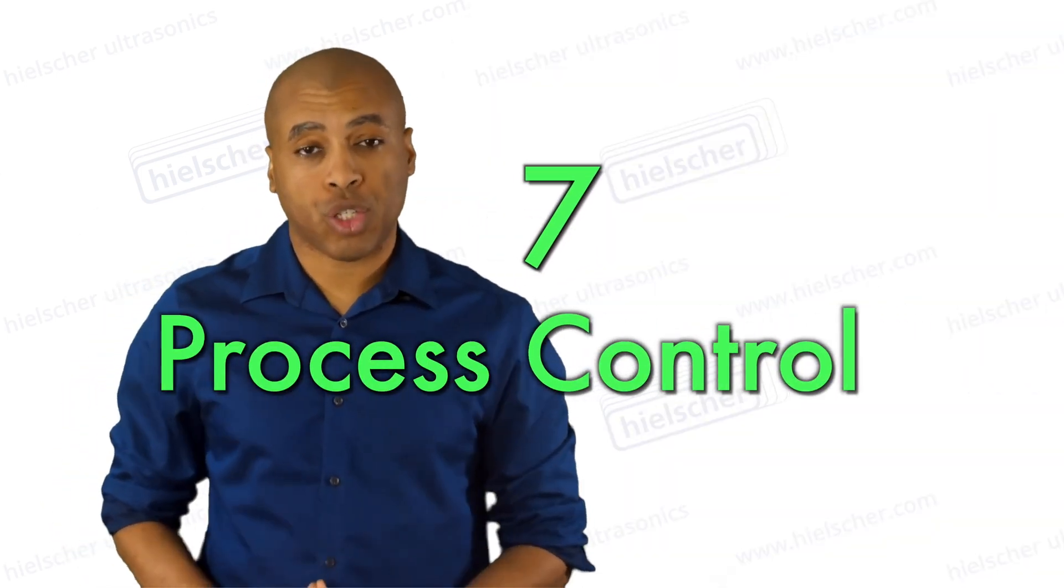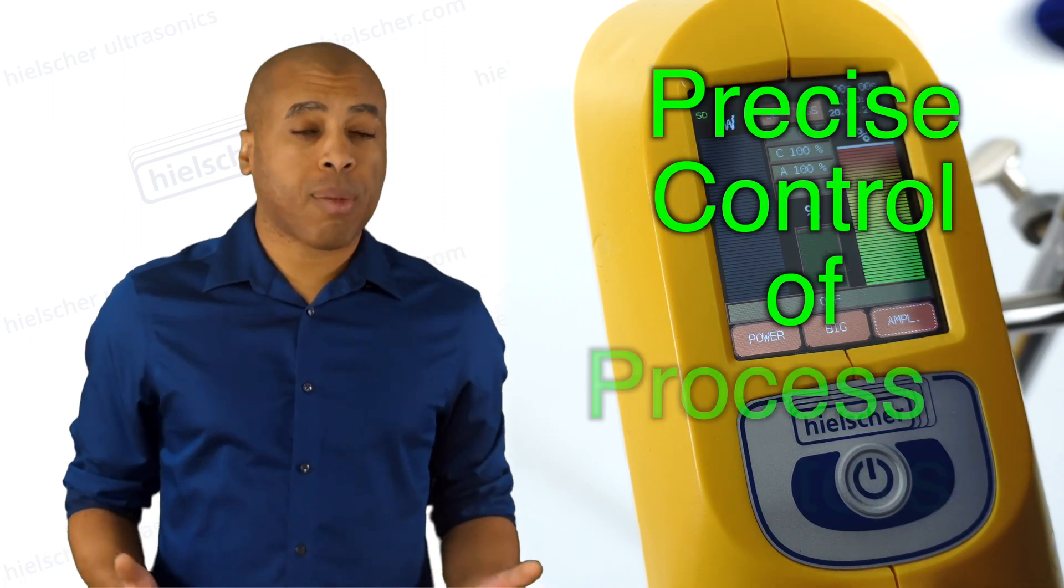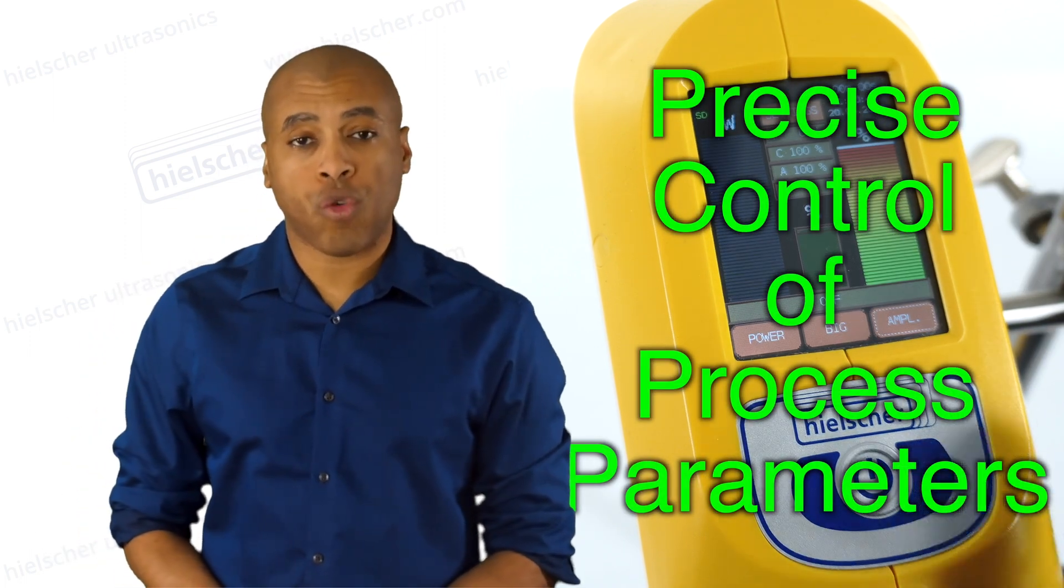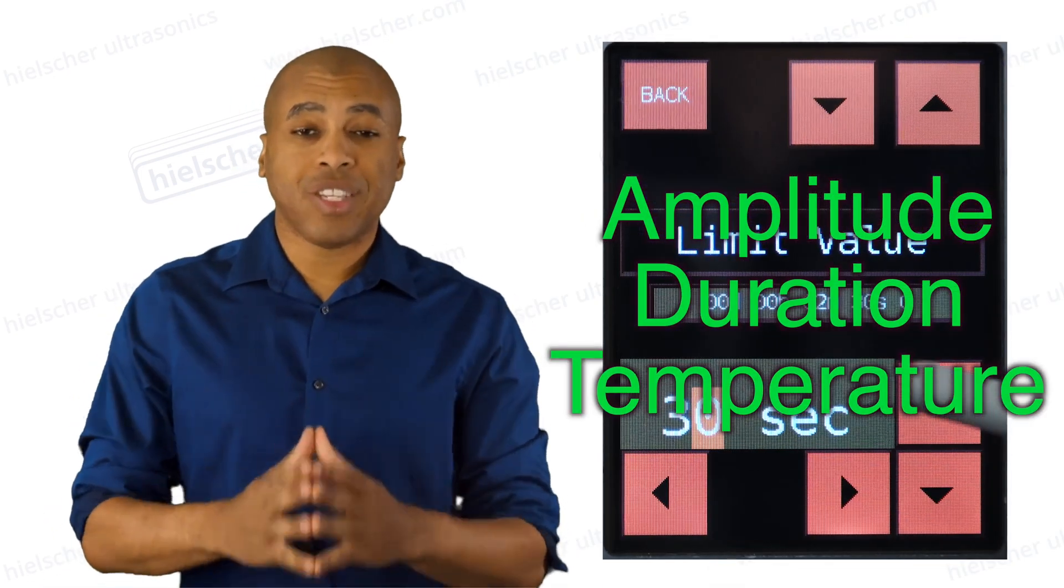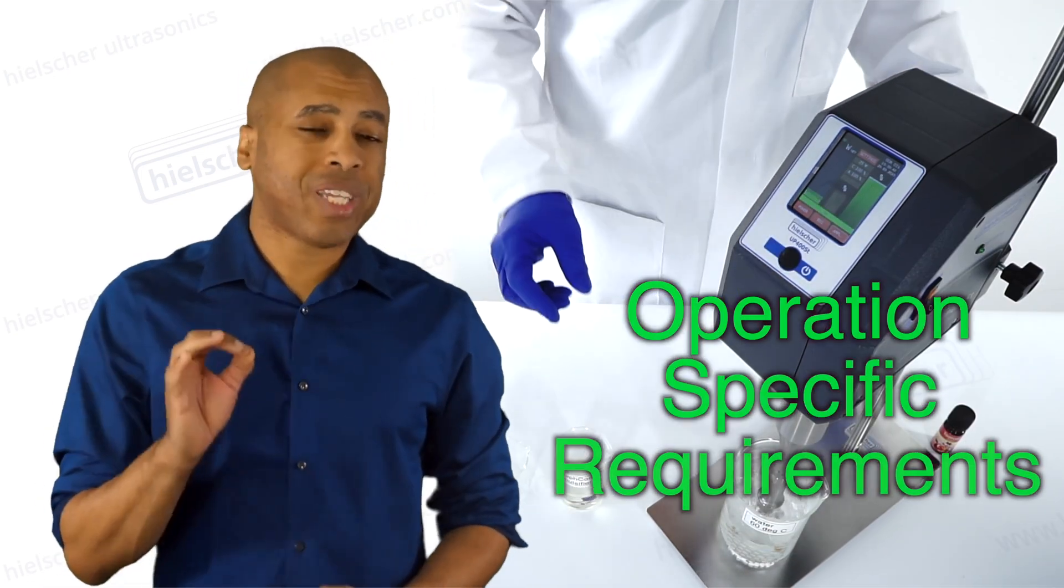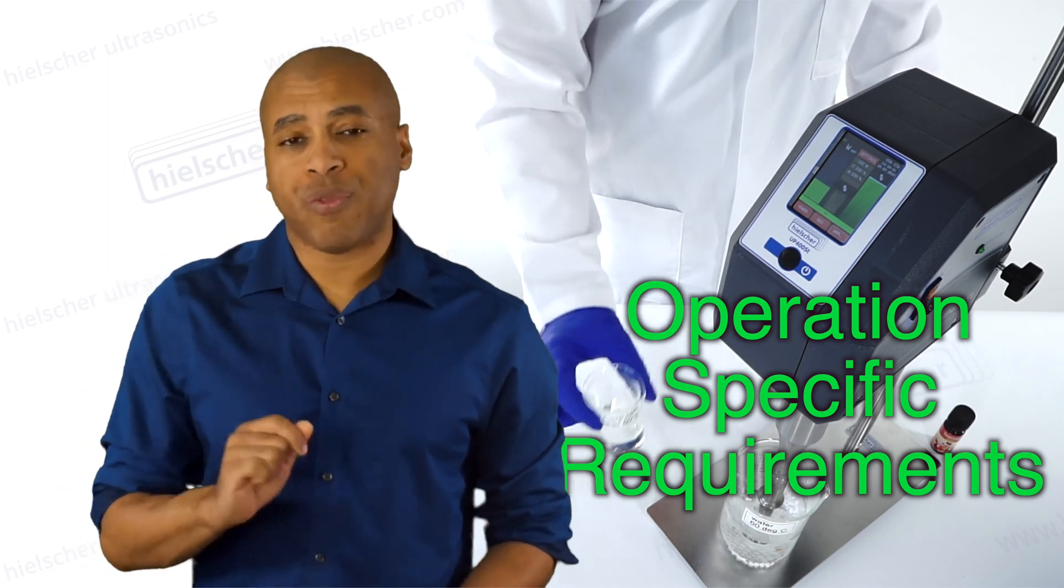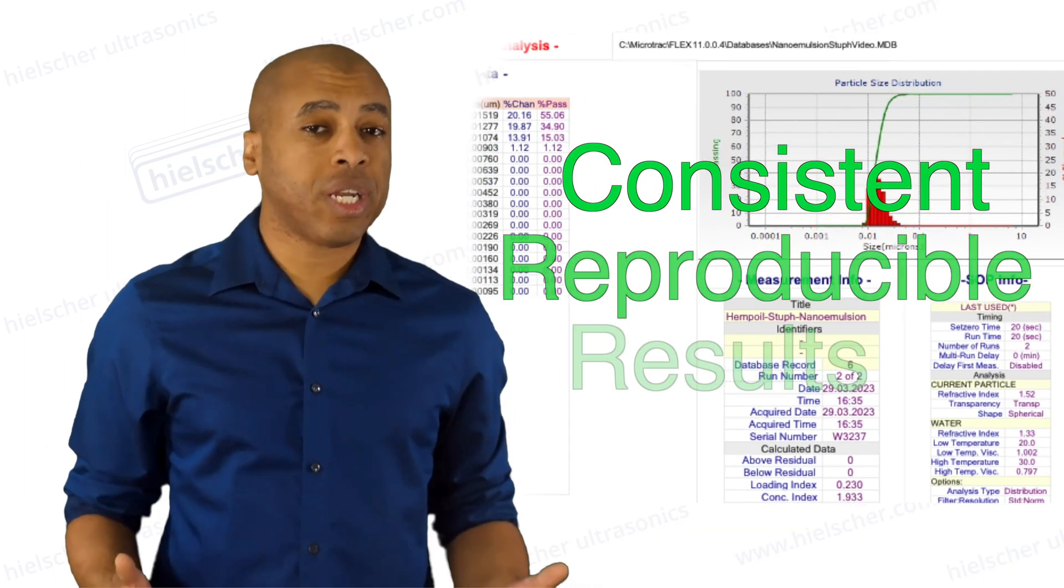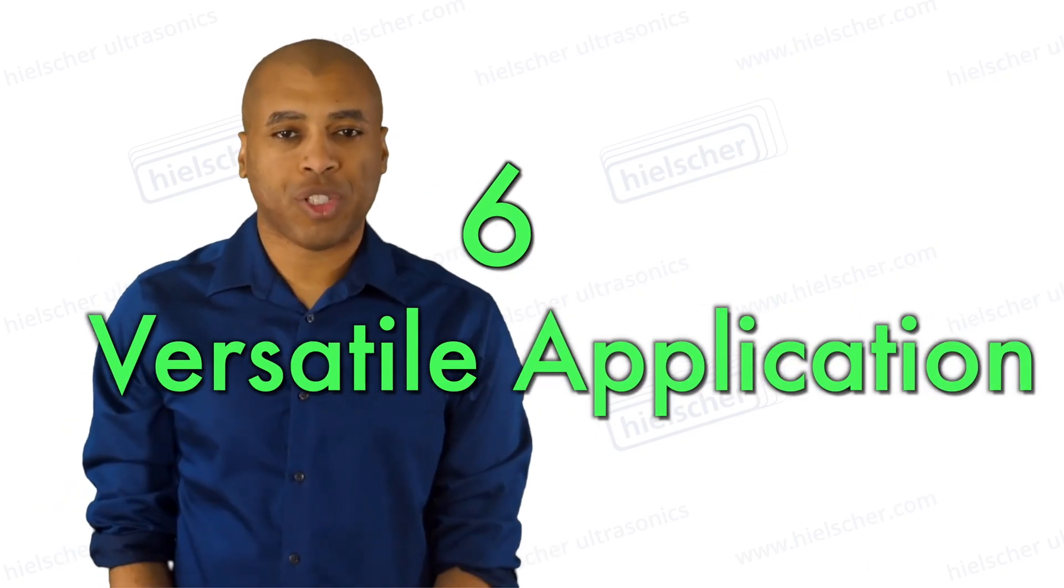Number seven, process control. Hielscher ultrasonic homogenizers offer precise control over process parameters such as amplitude, duration, and temperature. This allows the process engineer to tailor the operation to specific requirements, ensuring consistent and reproducible results.